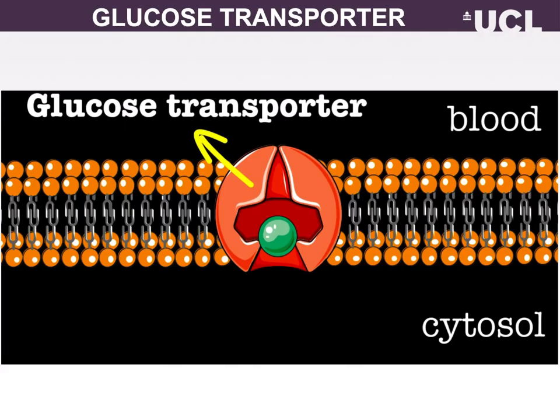A well-studied example of a facilitated diffusion carrier is the glucose transporter GLUT. From the activation energies for transmembrane simple passive diffusion of glycerol, glycol, and erythritol presented, it can be estimated that the activation energy for glucose should be well above 100 kJ per mole, but instead it is only 16 kJ per mole. Transporters occur in nearly all cells and are particularly abundant in cells lining the small intestine.